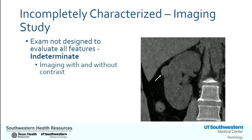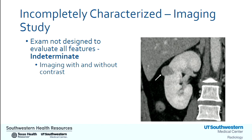For lesions of sufficient size detected on an exam not designed to evaluate all their features, they should be considered indeterminate. To adequately characterize a lesion, imaging should be performed before and after intravenous contrast to assess for enhancement. To illustrate this, I've included a non-contrast CT of the right kidney where the white arrow annotates what appears to be a contour deformity along the lateral aspect of the upper mid-kidney. Based on this image alone, it's impossible to know if that's a hemorrhagic cyst or a solid mass. After contrast, there is enhancement — this is a solid mass, and it turned out to be papillary renal cell carcinoma.